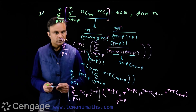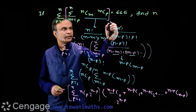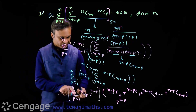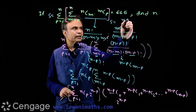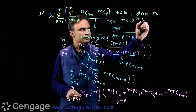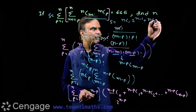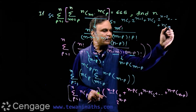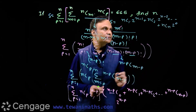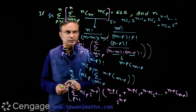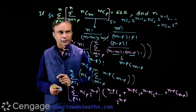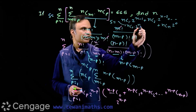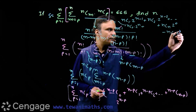Let us write out the terms. Suppose this sum is S. When p equals 1, we get nC1 multiplied by 2 power (n minus 1). Then nC2 multiplied by 2 power (n minus 2), and so on. The last term is nCn multiplied by 2 power 0. This is not a complete binomial expansion — one term is missing: nC0 multiplied by 2 power n. So we add this term and subtract it.